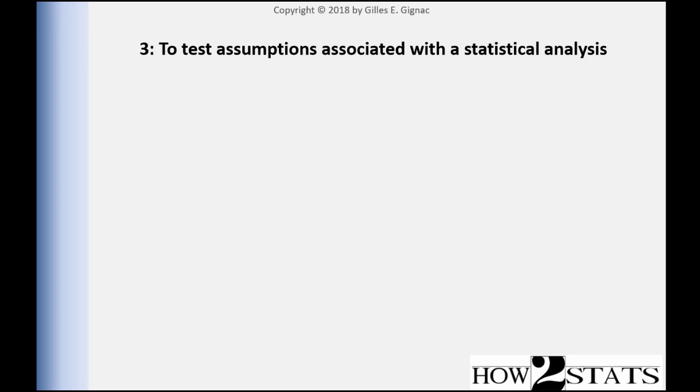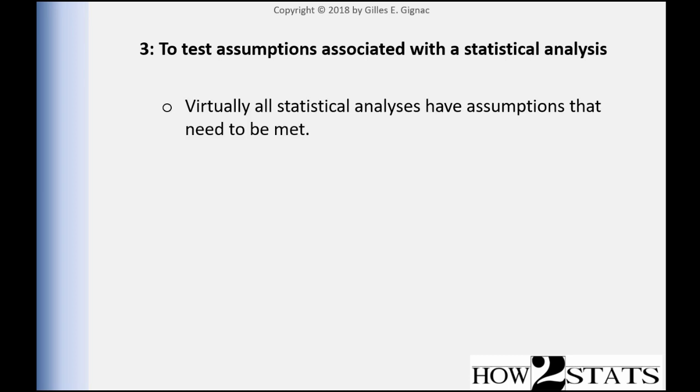Random sampling isn't tested statistically — either you used a random sample or you didn't. It's a qualitative determination. But in addition to random sampling, there are many assumptions associated with various statistical analyses. Virtually all statistical analyses have assumptions that need to be met, and those assumptions are statistical in nature. We have to run those analyses to see if the assumption has been met.